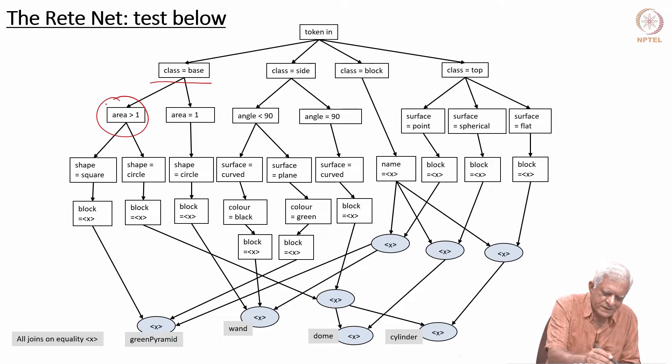Here, for example, we are saying area is greater than 1. So if the token has a value which is area greater than 1, it will come down this path. Otherwise, it will go down the other path where you have area 1. We have only two kinds of tests: one says area should be greater than 1, the other says area should be equal to 1. Then we look at the shape—some have shape square, some have shape circle, and so on.